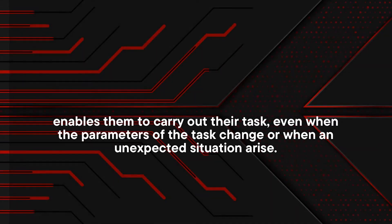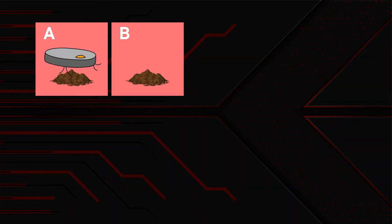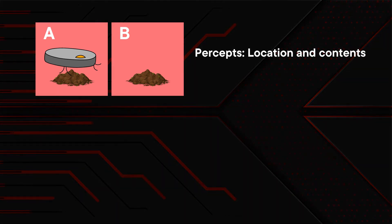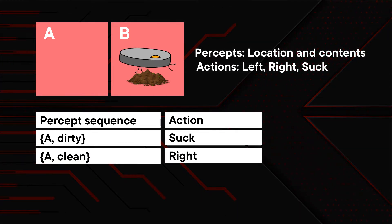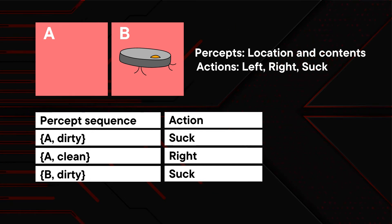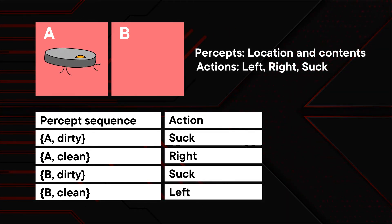Let's look at a simple example. Assume there are two environments, A and B. In both environments there is dirt. In A, there is an automatic vacuum robot. The percepts are location and contents, while the actions are move left, move right, or suck. Currently, the percept is A and there's dirt, so the action will be to suck. Now the percept is A and it's clean, so it should move to the right. The percept is now B and there's dirt, so it should suck. Now B is also clean, so it moves to the left. In this example, you can clearly see that the environment changes, but the intelligent agent can still complete its goal since it reacts to the changes in the environment.